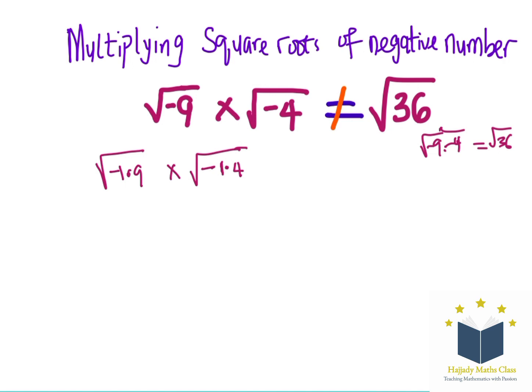Now, don't forget this rule of indices that says that when you have the square root of AB, this is the same thing as the square root of A multiplied by the square root of B.